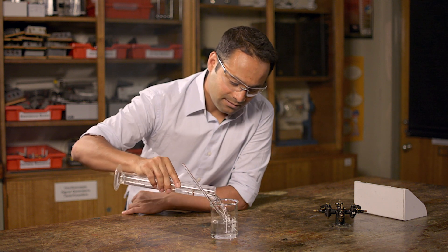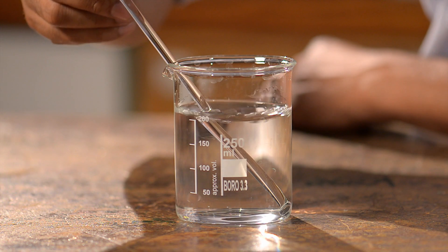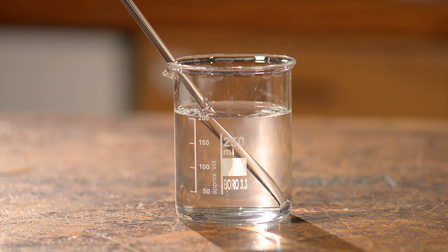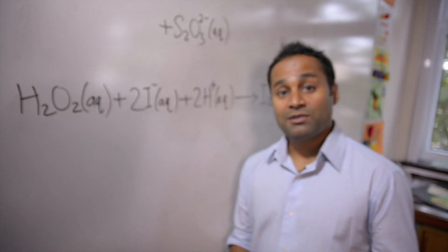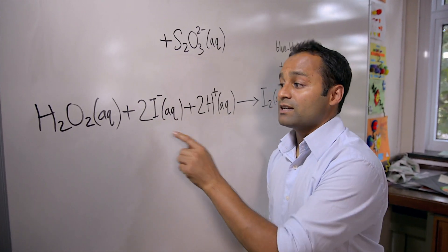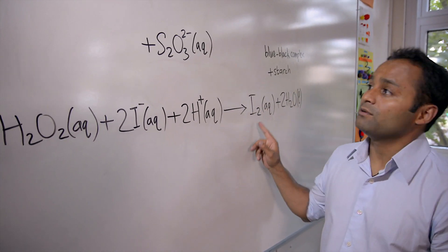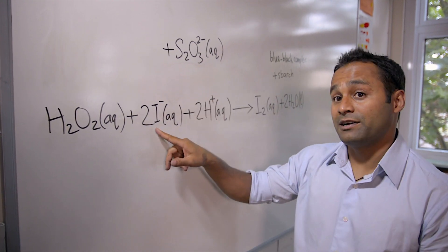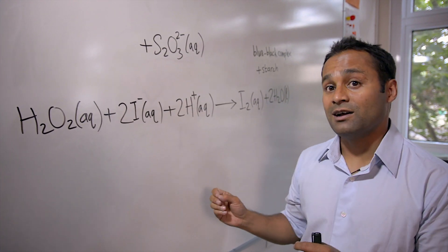The colour change happens when iodine reacts with starch to create a blue-black complex. When the solutions are mixed, hydrogen peroxide reacts with iodide ions to form iodine. As soon as the iodine forms, it reacts with thiosulfate ions and reverts to iodide ions. So as long as you have thiosulfate ions in the mixture, you don't get the colour change.